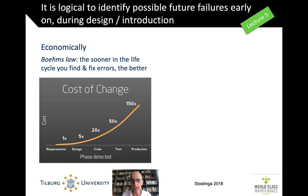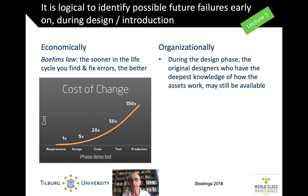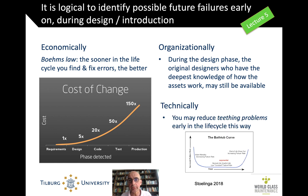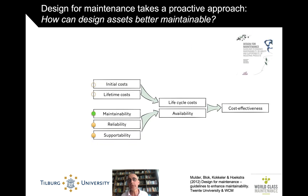We saw in Lecture 5 that economically it's really smart to have a lot of attention to the initial phases because the cost of change is so much lower there. Organizationally it's a good idea because that's the phase when you have the most knowledge about the design available. And even technically, because in that initial phase you often have teething problems — the more thorough you are in the initial stage, the lower those will be. But that's a bit of a reactive approach to design. Here we look at Design for Maintenance as a really proactive approach.